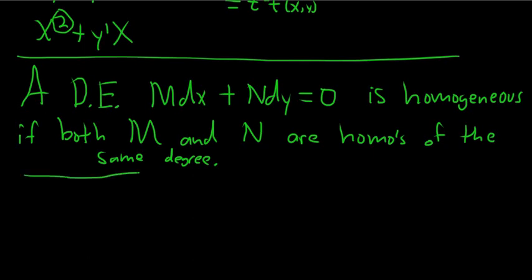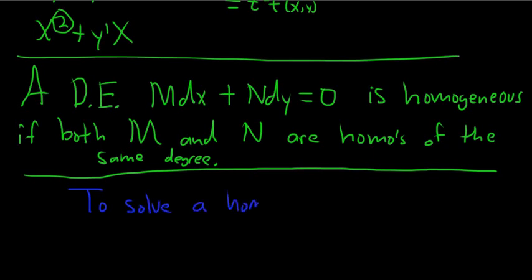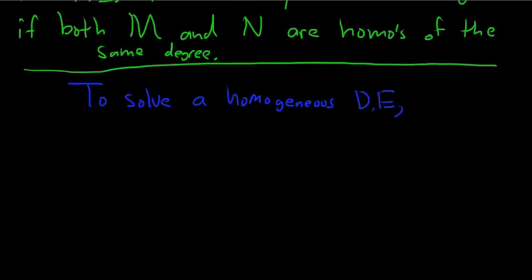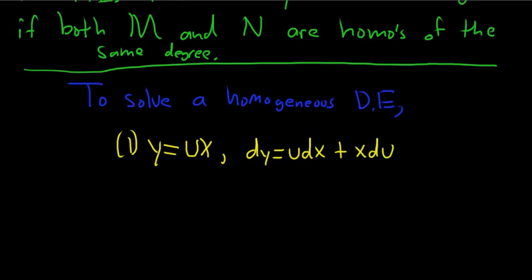Let me give you the steps required to solve a homogeneous DE. To solve a homogeneous DE, you have two choices. The first choice is you can let y equal ux. When you do this, you end up with dy equals u dx plus x du. So that's one choice.